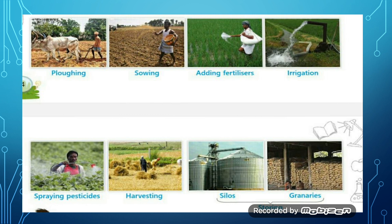Next stage is spraying. Pesticides and insecticides are sprayed to protect the crops from pests. Some small insects and worms harm the growth of crops; sometimes they destroy the crops completely. So in this stage, farmers use pesticides and insecticides to kill them and protect the crops. Sometimes when we grow plants, we can see small worms (keedhe) on the leaves and fruits that start damaging your crops.